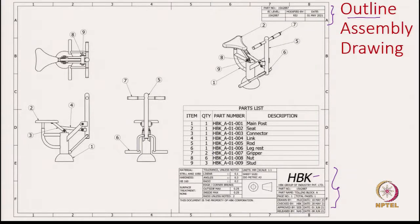We also have details about the drawing such as which angle of projection we are using — first or third angle — and what sheet size we are using, whether A3, A2, or A1, as well as the units used. Depending on the country, people use either SI units or the metric system. All that information needs to go into the drawing so that when someone starts reading it, they interpret it as you intend.